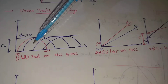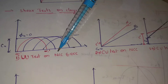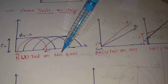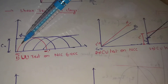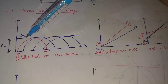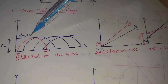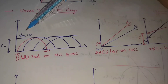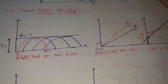First one: UU test. UU test means unconsolidated undrained test on NCC and OCC soils. NCC means normally consolidated clay and OCC means over-consolidated clay. CU means apparent cohesion value. φU is equal to 0, so this is a straight line and this angle is 0. φU means apparent angle of shearing resistance.